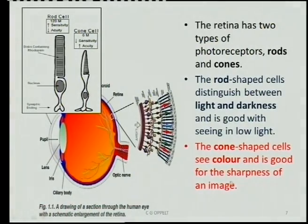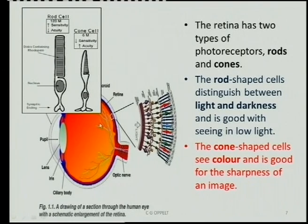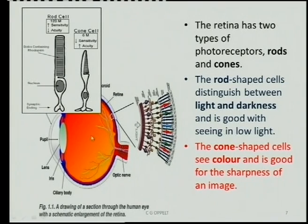There's a question about the vitreous humor and the aqueous humor. You will find the aqueous humor at the front and the vitreous humor at the back. The difference is simply that the aqueous humor is slightly more liquid, while the vitreous humor is slightly more gel-like. That gel-like consistency helps to give the eyeball its shape. So the main difference is just the consistency — one could almost say the thickness.